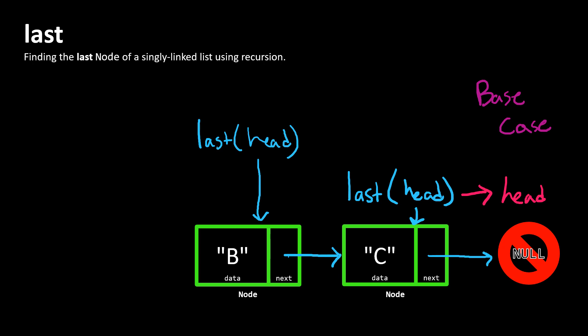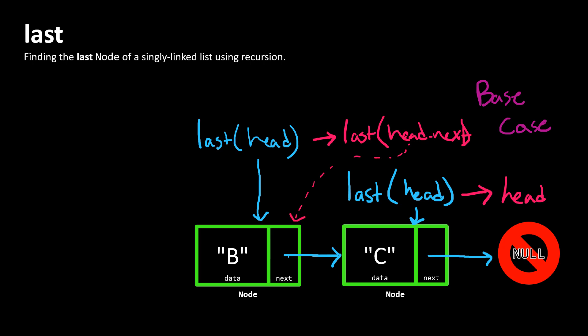The way we might think about this recursively is: rather than figuring out within this function on our own what is the last node of this list, why don't we ask what is the last node of a list that's a little bit smaller? So if we think about this as two lists — the complete list starts at B, and a sublist of that original list starts at C — we can say, what is the last node of the rest of this list? The rest of this list we can get by referring to the next node starting from head. And so we've broken down our problem a little bit.